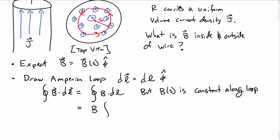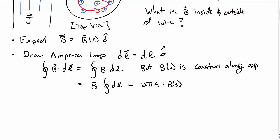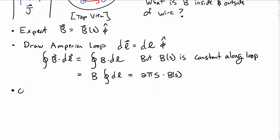You can pull b out of the integral, and then you just have a line integral around a loop, which is just the circumference. So this becomes 2πs times b of s.